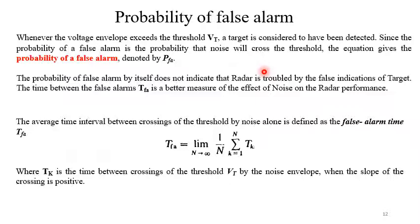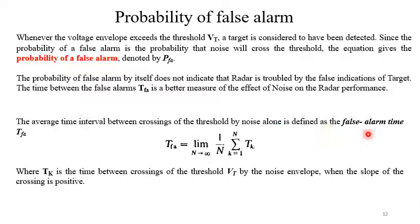The probability that the noise voltage envelope will exceed the threshold voltage V_t is found by integrating the Rayleigh PDF from V_t to infinity, which equals exp(−V_t²/2ψ₀). This is called P_FA — the probability of false alarm. Whenever the voltage envelope exceeds the threshold V_t, the target is considered to have been detected, since the probability of a false alarm is the probability that noise alone will cross the threshold.